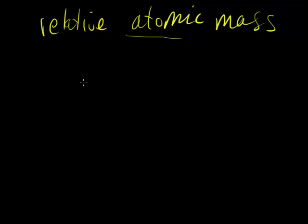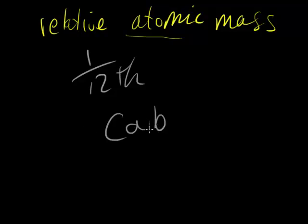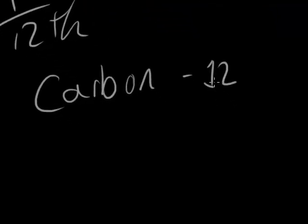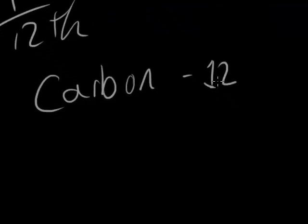And what scientists, and specifically chemists, have chosen to compare atoms to when we're using relative atomic mass, is one twelfth of an atom of carbon-12. And carbon-12 is a specific type of carbon which has 12 protons and 12 neutrons. It's a specific isotope, because there are different isotopes of carbon, but this is relative to carbon-12 specifically.